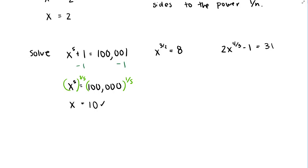This illustrates that when solving equations, we want to work in reverse order of operations. For x⁵ + 1 = 100,001, we have exponentiation and addition, so we subtract first, then undo the exponent. For 2x^(4/3) - 1 = 31, we have subtraction, multiplication, and exponentiation, so we add the 1 first, then divide by 2, then undo the 4/3 power — in that order.